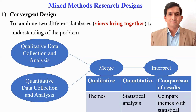The first one is Convergent Design. In this design, we collect and analyze data for both qualitative and quantitative methods independently and then we merge them. After that, we identify the themes through qualitative methods and do the statistical analysis in quantitative methods, and then we compare the themes with statistical analysis and interpret the results.